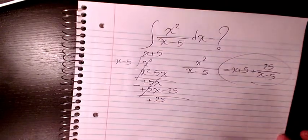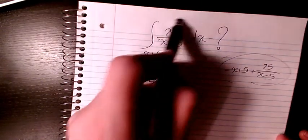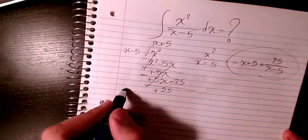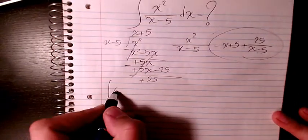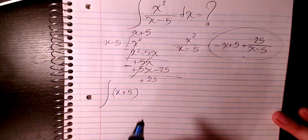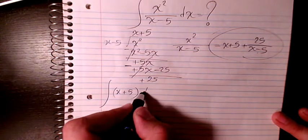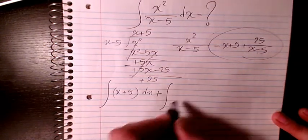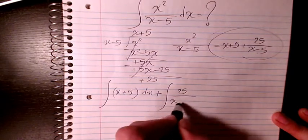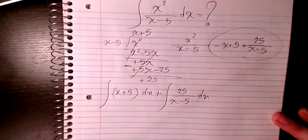So that will be the answer. That expression will be the same as this expression here. So I will write it here. So we have x plus 5 dx plus 25 over x minus 5 dx.